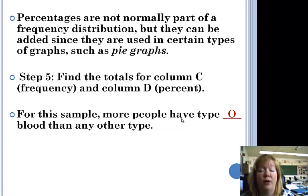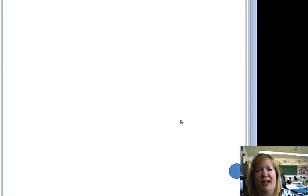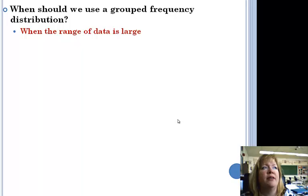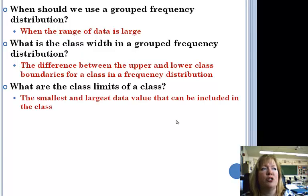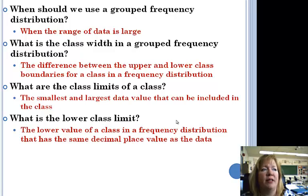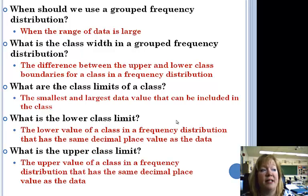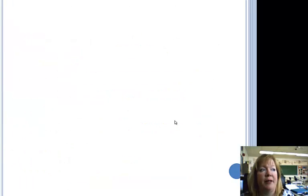So it helped us get organized and find out where that is. Now in real life, O is very rare blood type. But this isn't real life. This is out of a textbook. Okay, when should we use group frequency? When the range of data is large. What is the class width? The difference between the upper and lower class boundaries for a class in a frequency distribution. What are the class limits? The smallest and largest data value that can be included in the class. Those are the class limits. What is the lower class limit? The lower value of a class in a frequency distribution that has the same decimal place as the data value. And the upper class is the same thing except it's the upper value of a class in a frequency distribution that has the same decimal place value as the data.